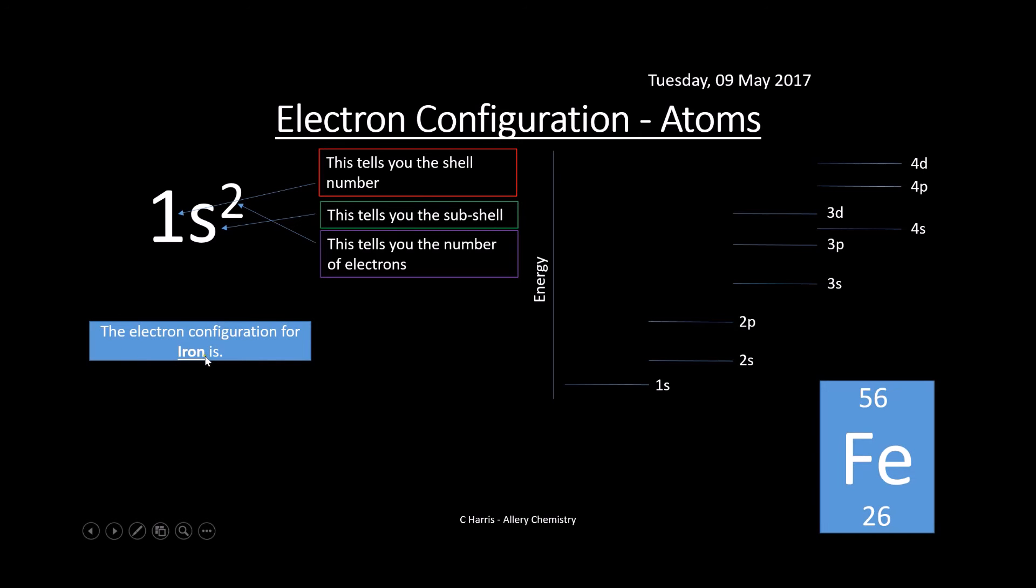Basically, we're looking for these numbers on top to add up to 26, bearing in mind there are fixed rules. 3S2, 3P6, 4S2, 3D6.